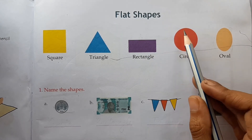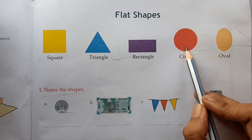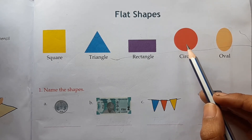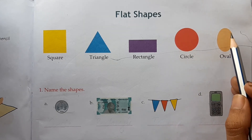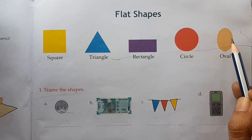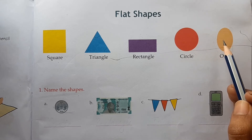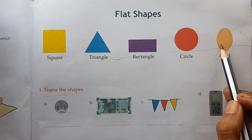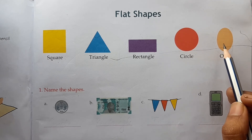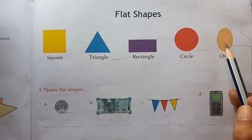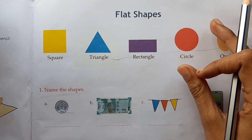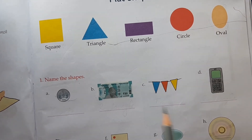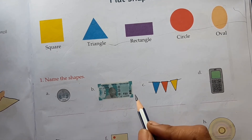Now our next shape is circle. This is the shape of a circle. A circle has no sides and no corners. Our next shape is oval. This is the shape of an oval — just like the shape of an egg, which you must have seen. An oval shape also has no sides and no corners.